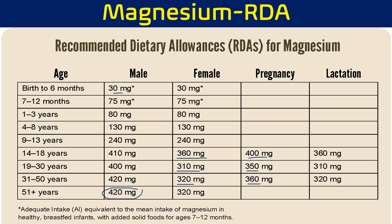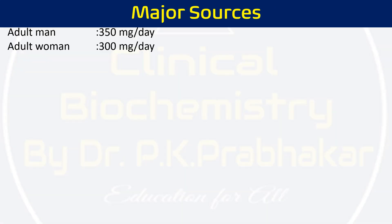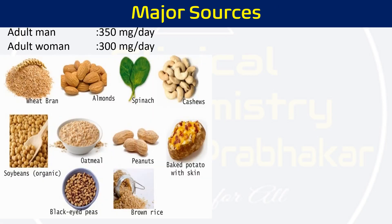Magnesium is not a trace element; it is a principal element. Why? Because our requirement is more than 100 mg per day. If any mineral's daily requirement is less than 100 mg per day, we call it a trace element — but magnesium requires more than 100 mg per day. On average, adult men require 350 mg per day and adult women require roughly 300 mg per day.